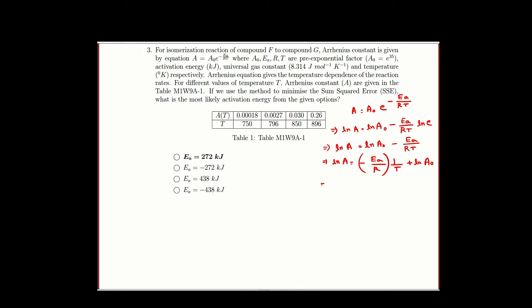This is in the form y equal to mx plus c where y is ln A which is our dependent variable, x is 1 by T which is the independent variable, m is the slope which is given as Ea by R.